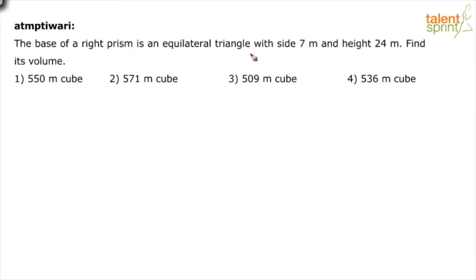The base of a right prism is an equilateral triangle with side 7 meters and height 24 meters. Find its volume. So he is talking about a right prism where the base is an equilateral triangle and the side of this equilateral triangle is 7 meters and the height of this prism is 24 meters.